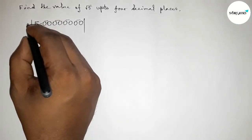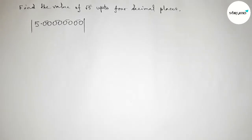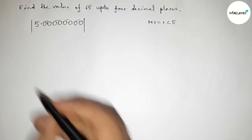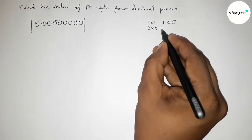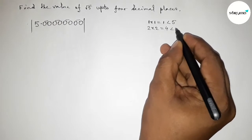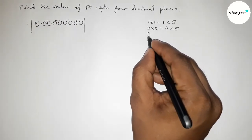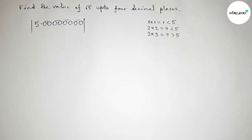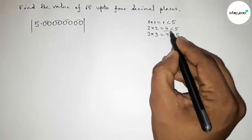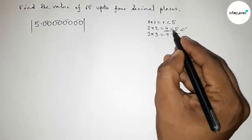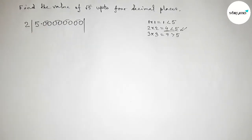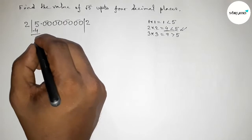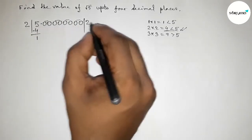Take a number and multiply it by itself such that the result is less than 5. If we take 1, then 1×1=1, less than 5. If we take 2, then 2×2=4, less than 5. If we take 3, then 3×3=9, greater than 5. So we take 2, since 4 is closest and less than 5. Put 2 here, and 2×2=4. Subtract to get 1, then place the decimal point.